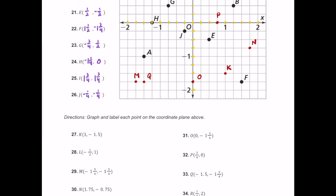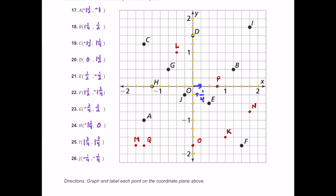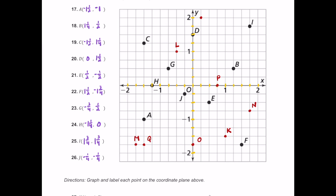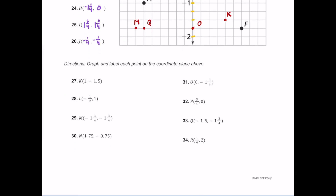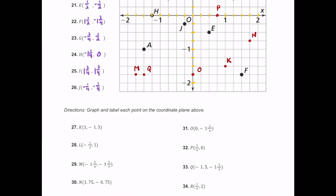Finally for R, which is at one fourth comma two. Positive one fourth is to the right, and we move up two units — all the way up here, positive two units. We plot the point here and label it R. That's all the points plotted.